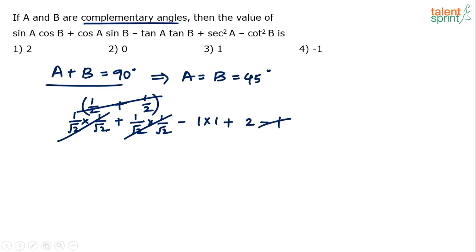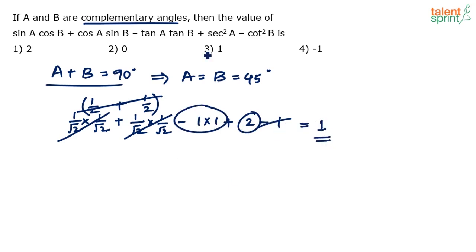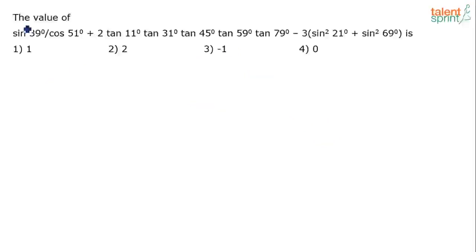What are we left with? 2 minus 1×1. Minus 1 into minus 1 is minus 1, so we have 2 minus 1 = 1. The final answer to this question is option 3.